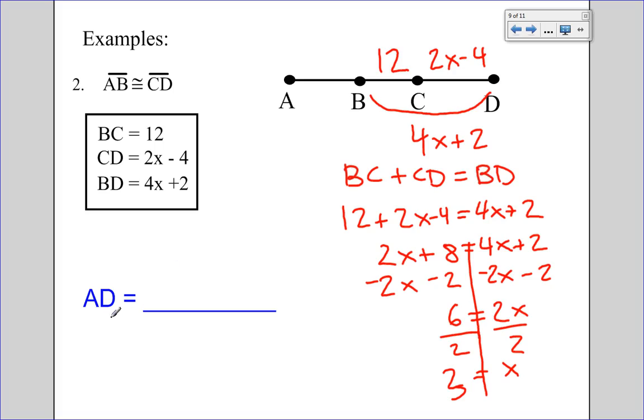With that in mind, we're not looking for x, we're actually looking for AD, but we need this x equals 3 to solve. I know that BC is already 12. I can use this information about x equals 3 to find CD. 2 times 3 is 6, minus 4 equals 2. So CD is 2, and because CD is congruent to AB, AB will also be 2. So 2 plus 12 plus 2 equals 16.